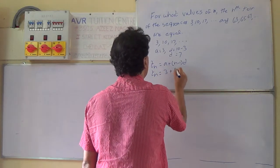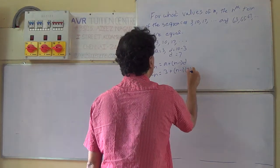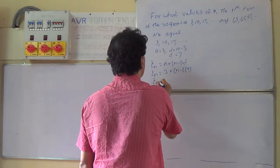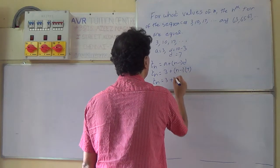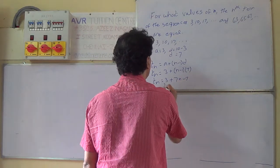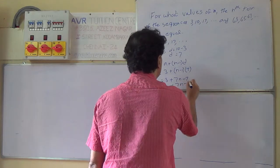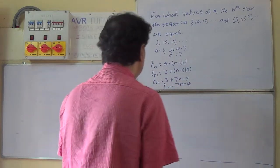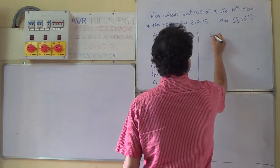tn equals 3 plus n minus 1 into 7. tn equals 3 plus, if you multiply 7 inside, 7n minus 7. tn equals 7n minus 4. This is for the first sequence.